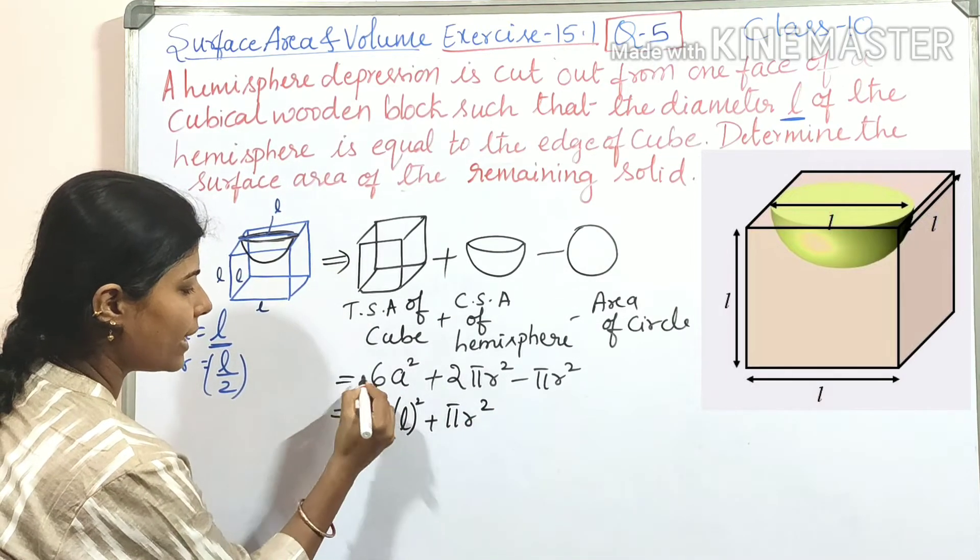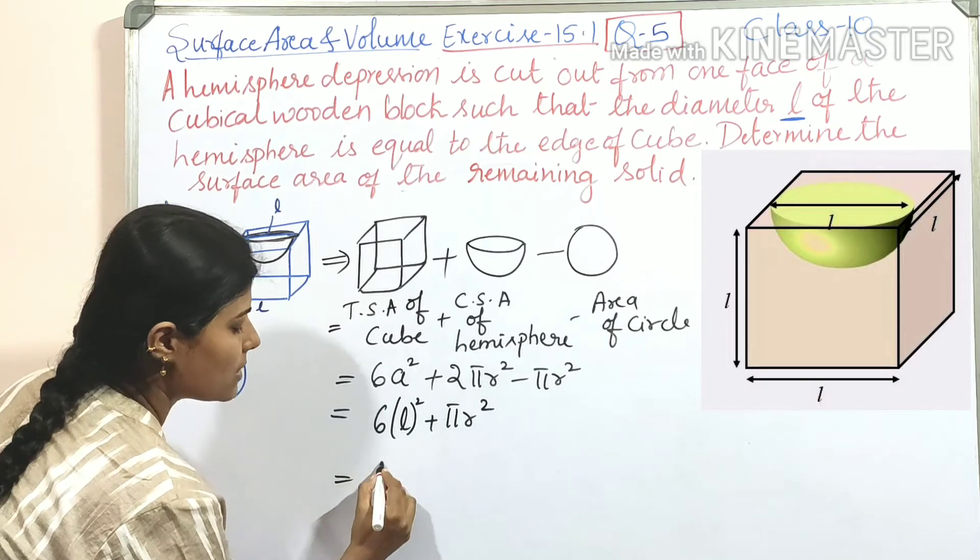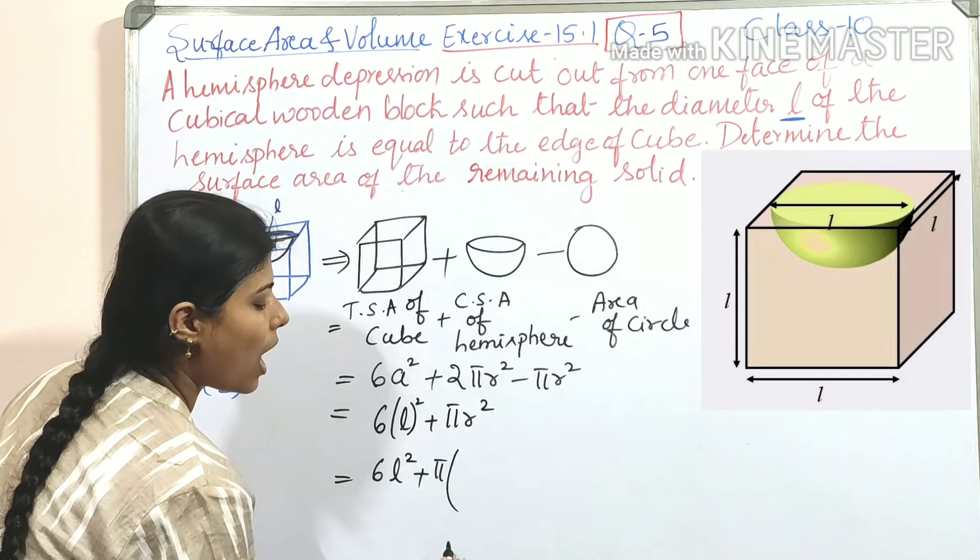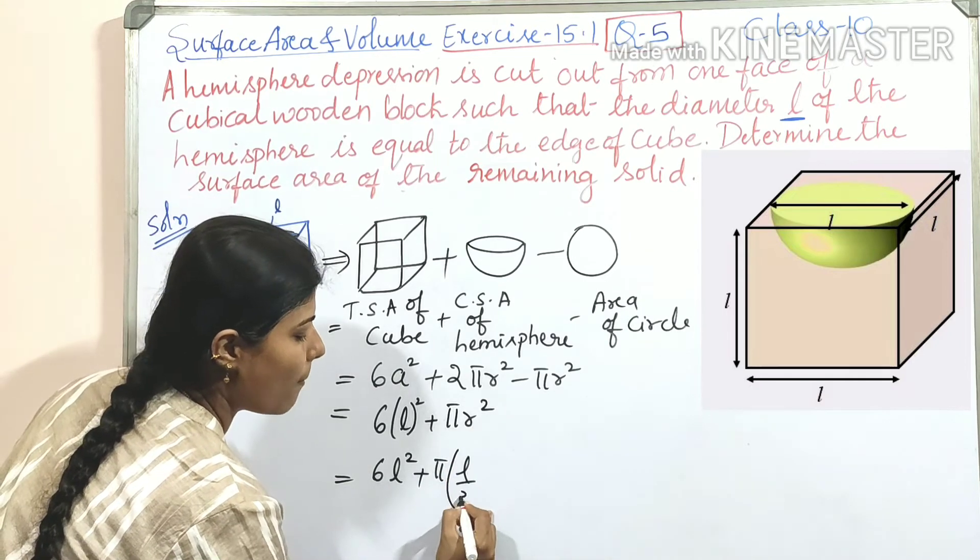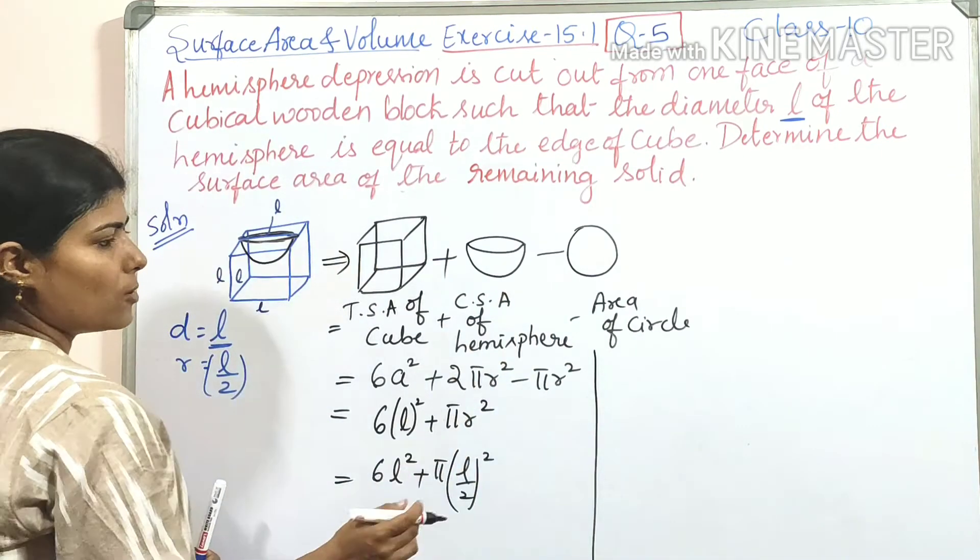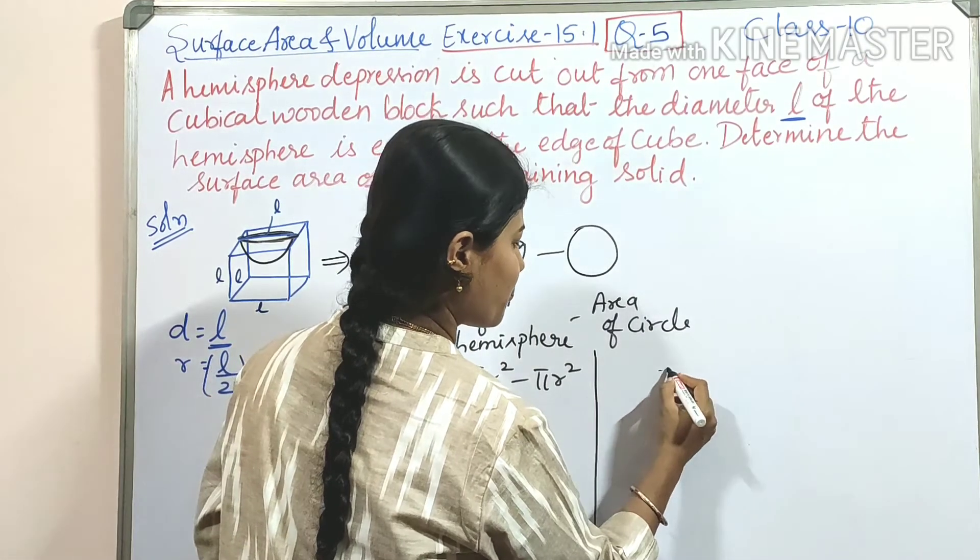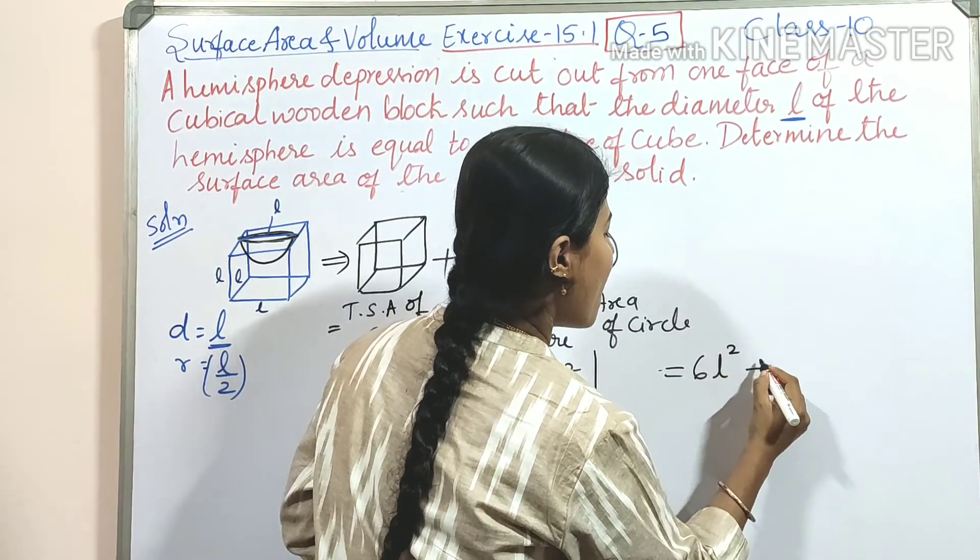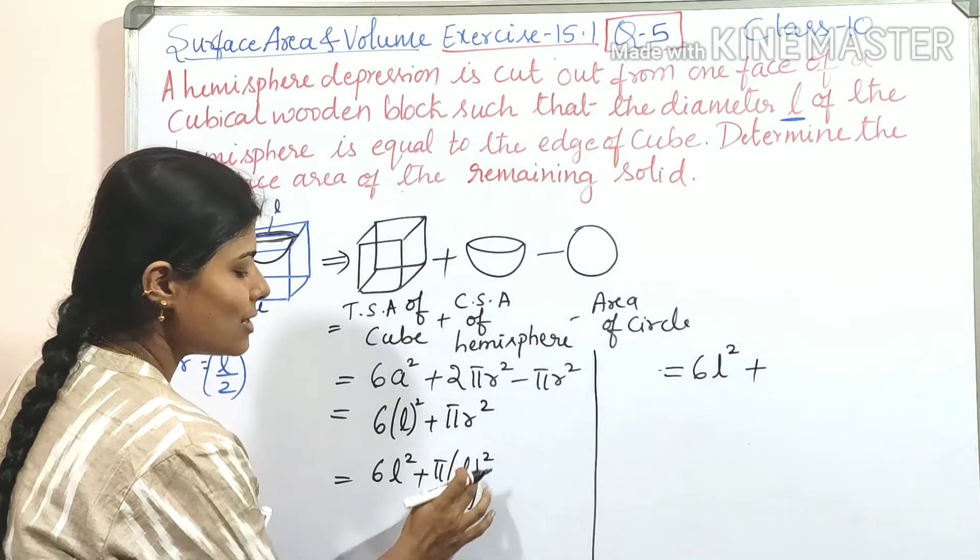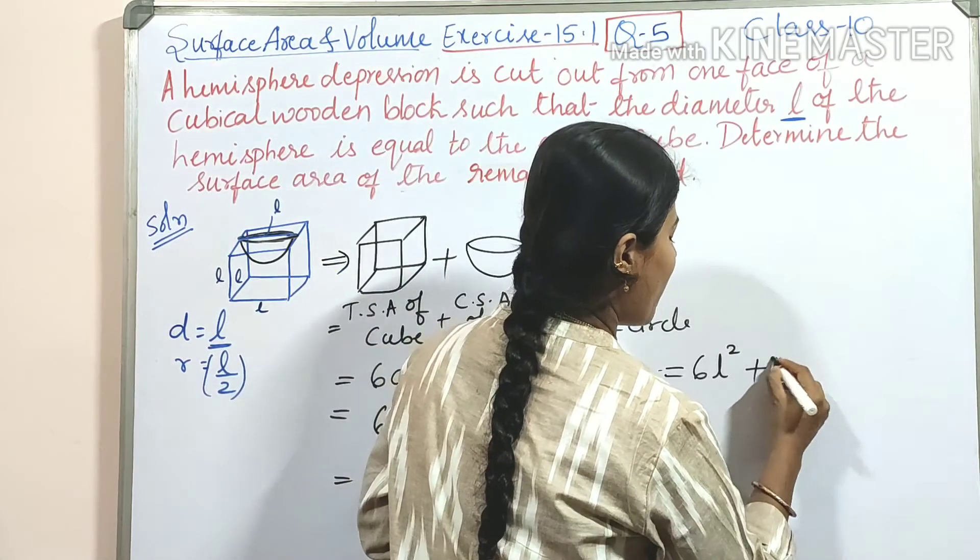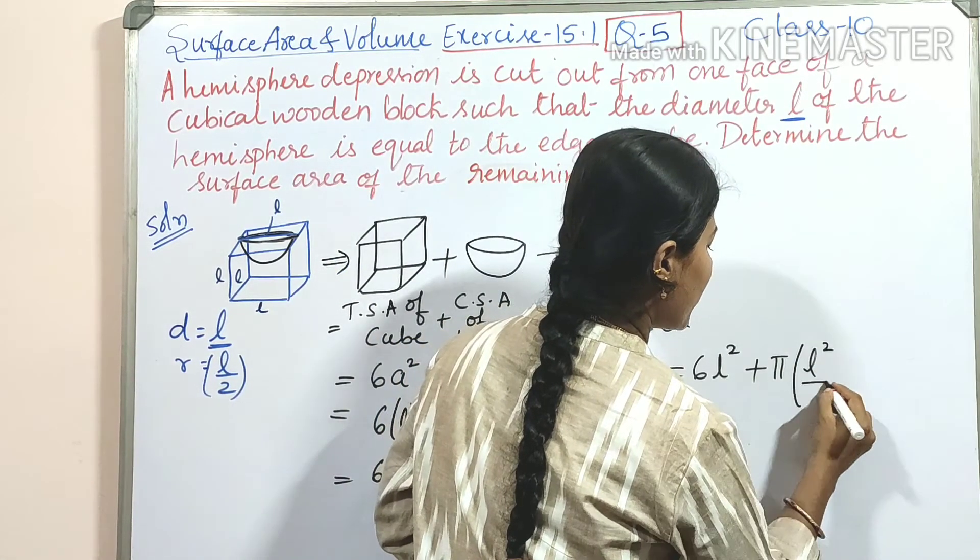So again, R² is L by 2 whole square. L by 2 whole square. So now if we consider 6L² remains as it is. Plus πL² by 2 whole square means L² by 4. So πL² by 4.